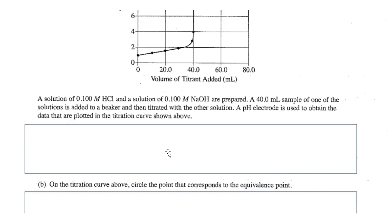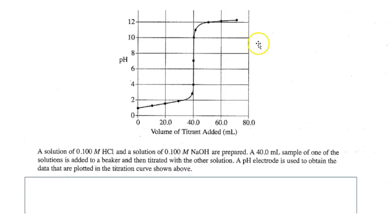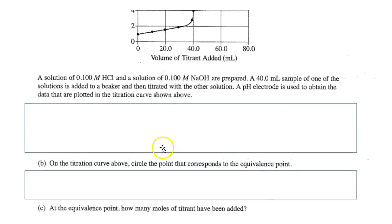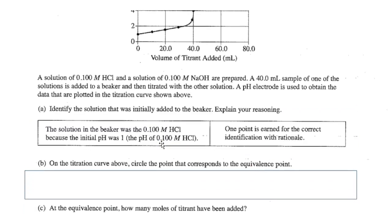On the titration curve above, circle the point that corresponds to the equivalence point. Well, I think that would be right there. That's your equivalence point. Is there anything hiding under here?